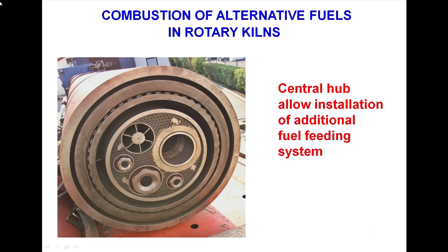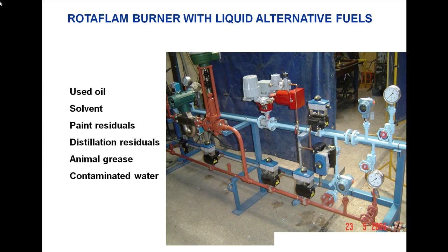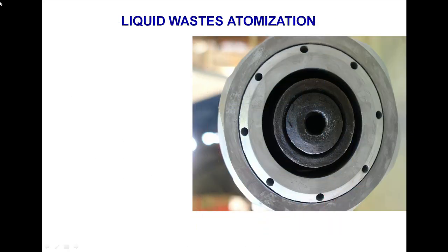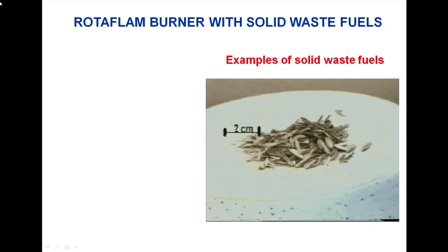Combustion of alternative fuels in rotary kilns — the central hub allows installation of additional fuel feeding systems. Rotoflame burner with liquid alternative fuels: used oil, solvent, paint residuals, distillation residuals, animal grease, contaminated water. Liquid-based atomization: fuel pressure 3 to 10 bar, atomizing air 6 to 8 bar, maximum particle size up to 6 mm, viscosity maximum 1000 centistokes.